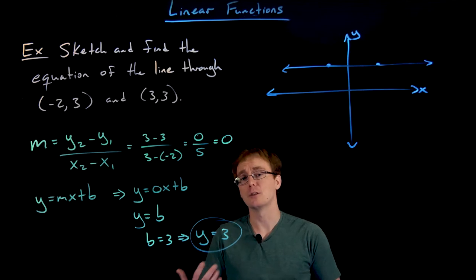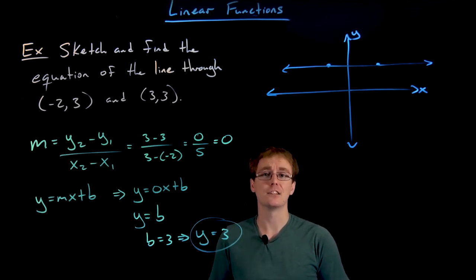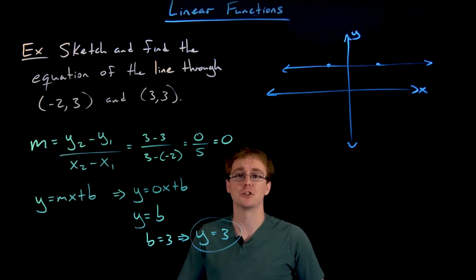How do we write the equation for a horizontal line? Well, it's always going to be of the form y is equal to some constant. And that constant is going to be pretty obvious from the points or information we are given.